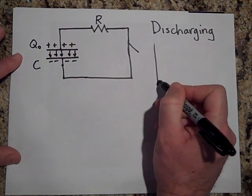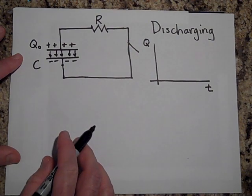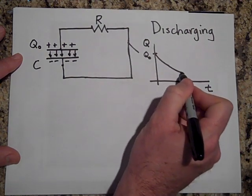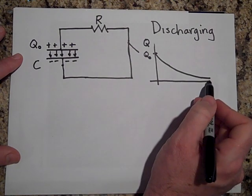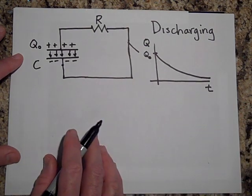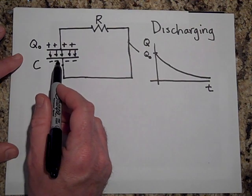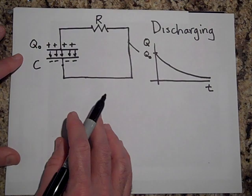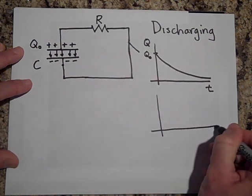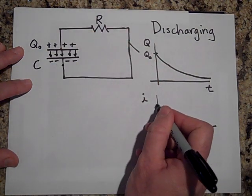I'll say that one more time. As the amount of electrons decrease on this plate, the rate at which they want to leave the plate goes down. So if I were going to show you the charge on the capacitor as time goes on, it starts out at Q-naught and then it decays — but it's never going to reach zero, because as time goes on there'll be less charge on here and it'll be less and less in a hurry to go to the other side.